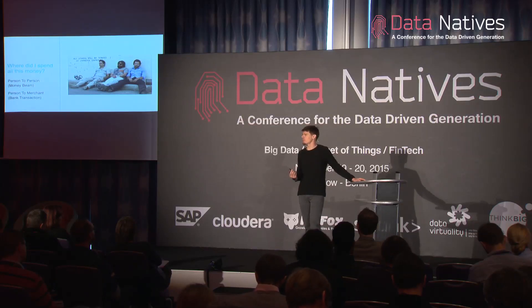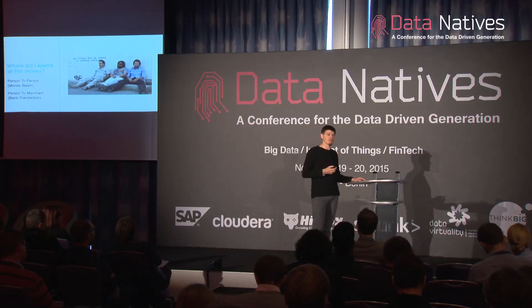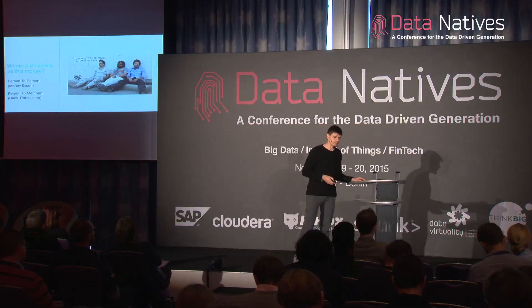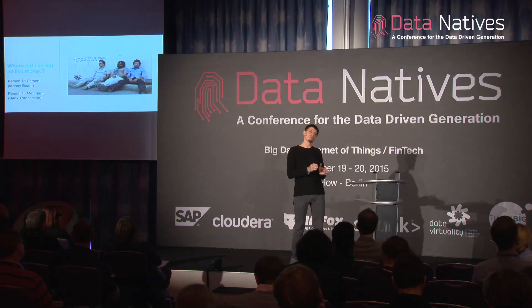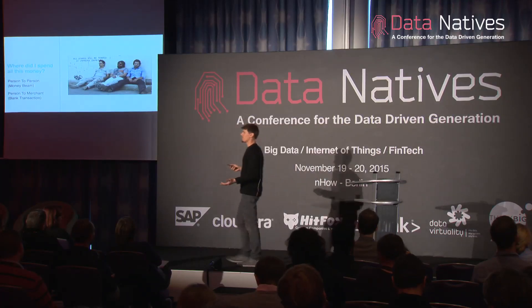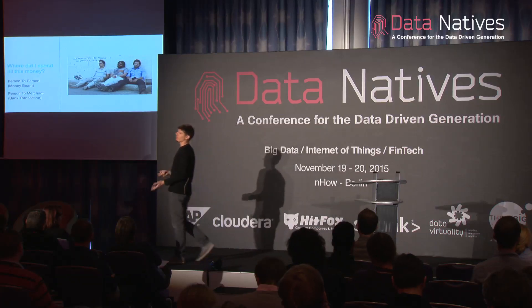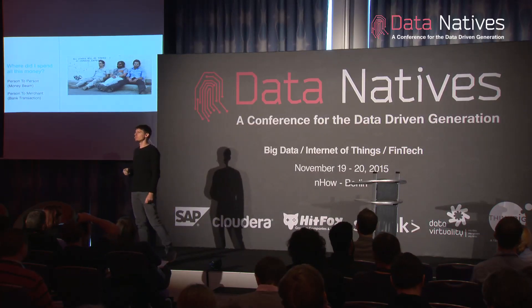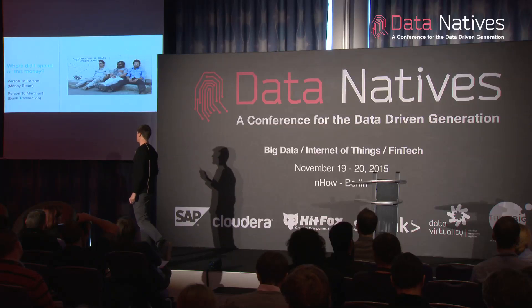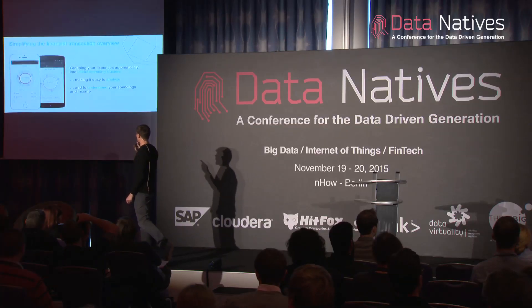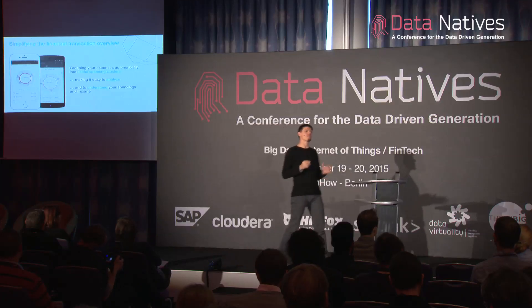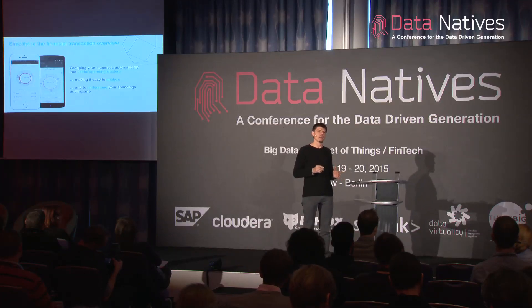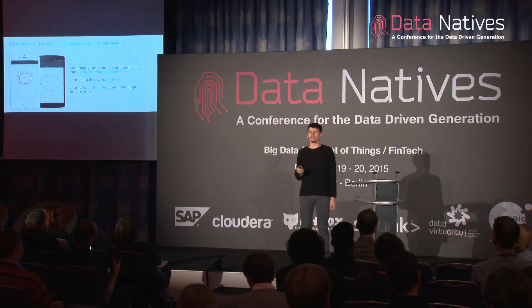We believe there are two types of transactions we need to categorize: person-to-person transactions like lunch money, and transactions to a merchant like paying my landlord. Let's look at how it should look and what we want to achieve - we want all our transactions categorized correctly into the appropriate categories, and obviously you can change the category if you disagree. So you really understand your spending and may change your behavior - it's important just as an insight.